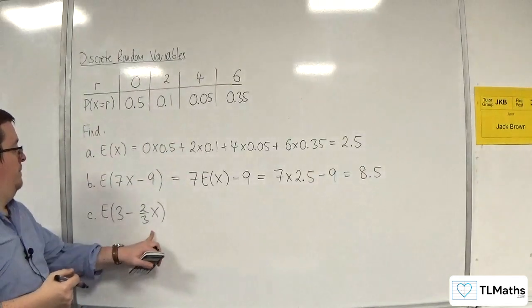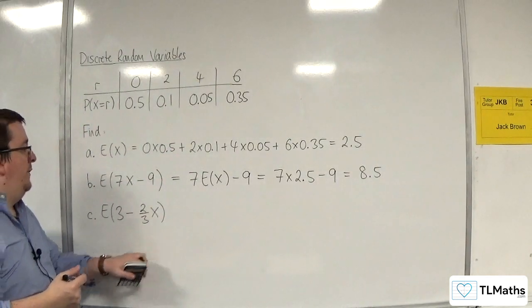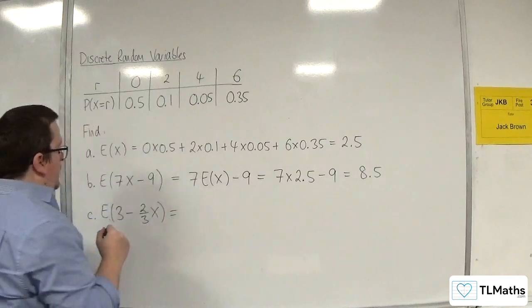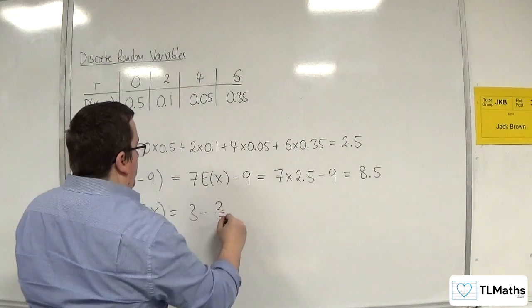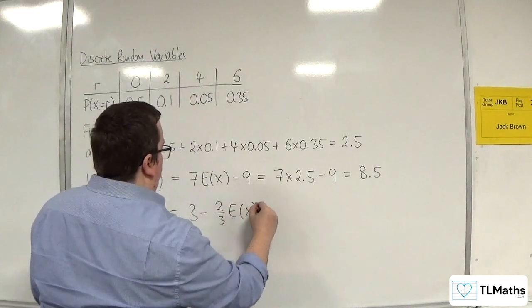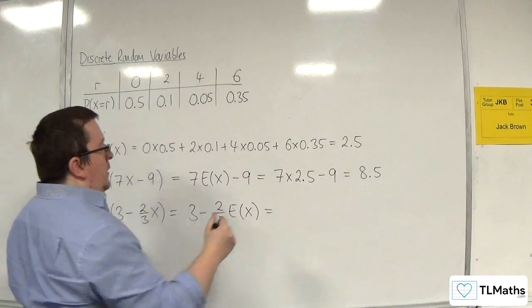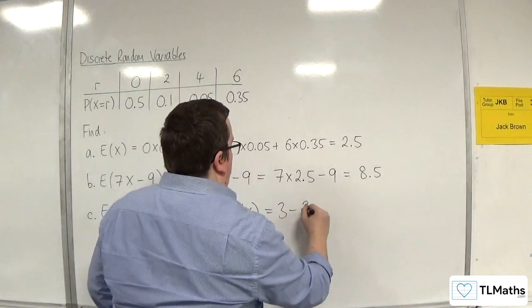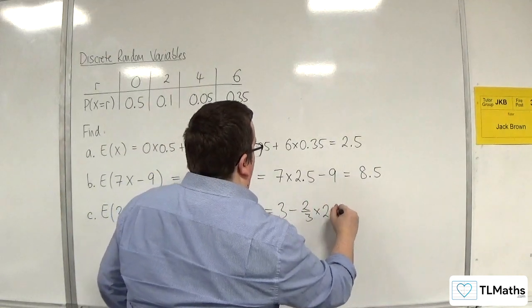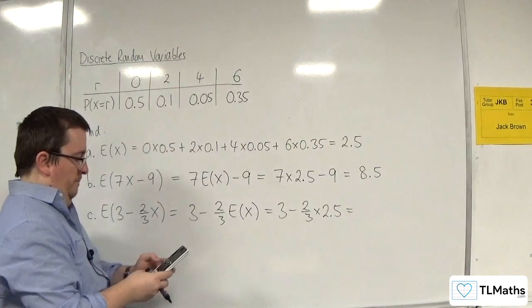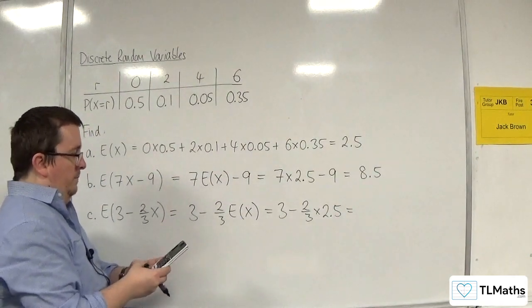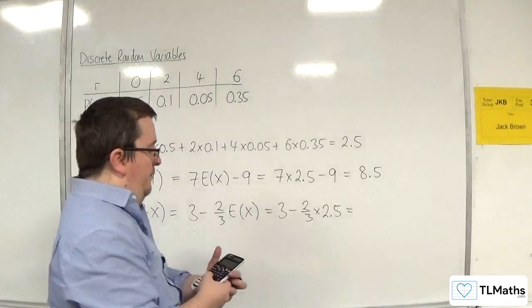Now for C, E of 3 take away 2 thirds x. So that is going to be 3 take away 2 thirds of E of x. So 3 take away 2 thirds of 2.5. And we get 4 thirds.